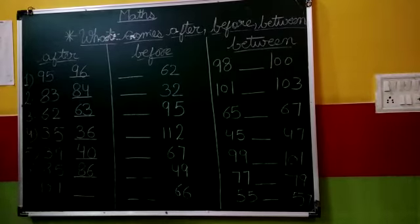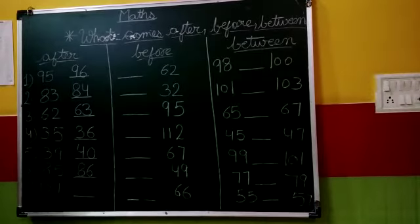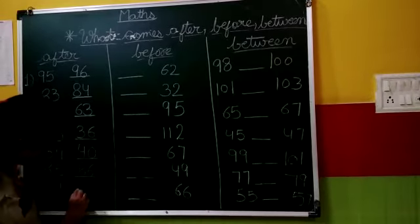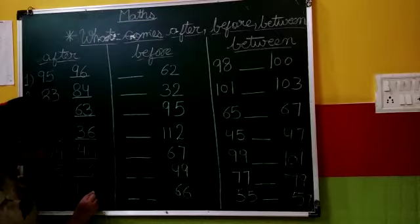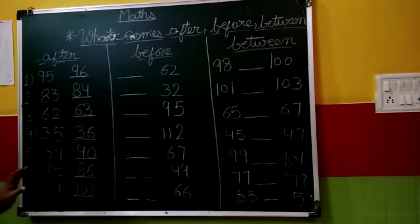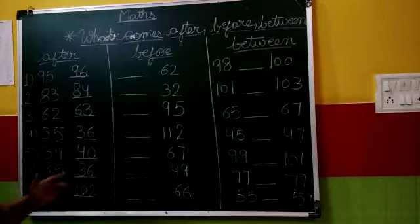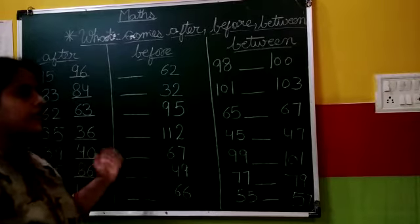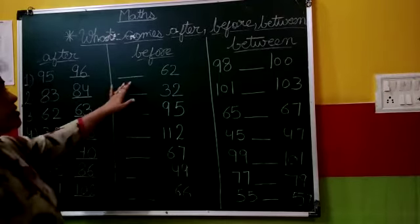101. What comes after 101? 102. So children, this is how we do after. Now we will do before. Before means what comes before that number.